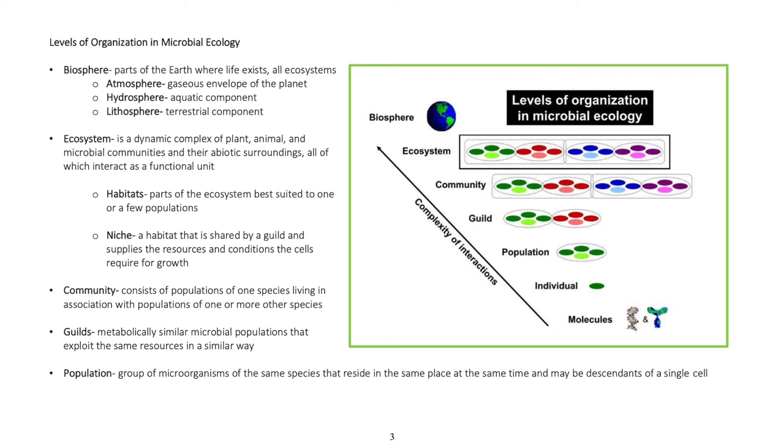Community consists of populations of one species living in association with populations of one or more other species. Guilds are metabolically similar microbial populations that exploit the same resources in a similar way.